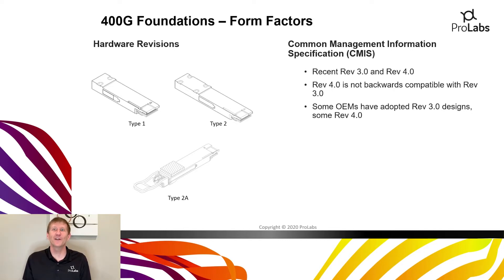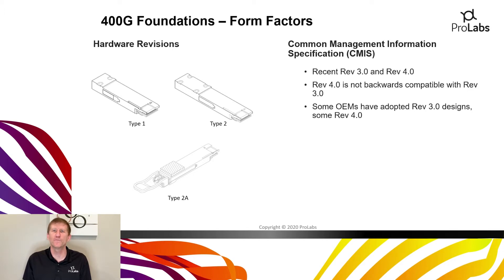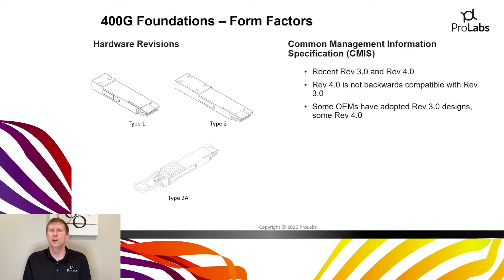Even within the QSFP-DD form factor there's variation — three hardware types: Type 1, Type 2, and Type 2A. Type 2 is the most commonly deployed today and protrudes a bit further from the face plate than Type 1, which is closer in size to the standard QSFP-28. Type 2A is a newer addition to address thermal management for upcoming 400 gig ZR applications, requiring a heat sink on top. There are also two revisions of the CMIS management information system in the market today.